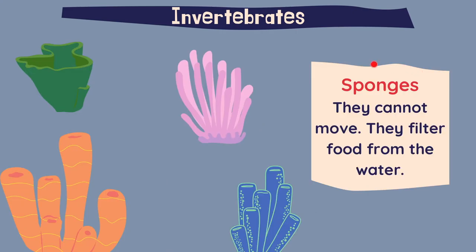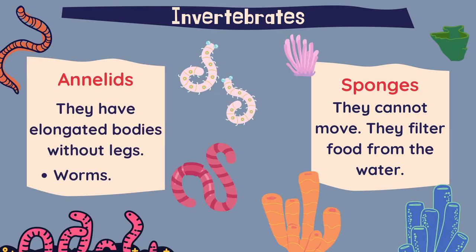And finally, sponges — they cannot move. They filter food from the water. So we have annelids that are basically worms, and sponges that live underwater. Sponges are the only invertebrates that cannot move.